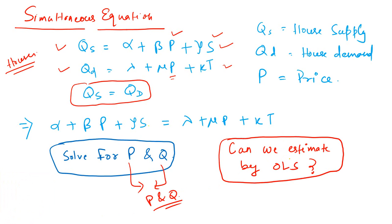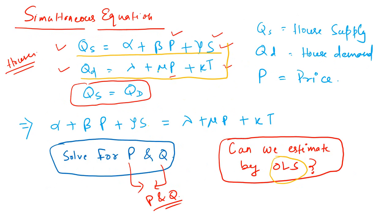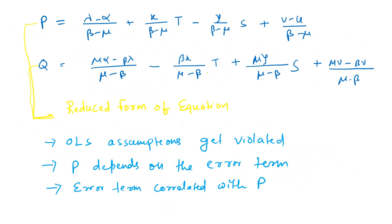The question here is: can we estimate P and Q using ordinary least squares? We have two regression equations — this is the first one and this is the second one. Can we estimate using ordinary least squares? The answer is no, and in the next slide we will see why. If you solve the previous equations with a bit of modification — bringing in the error terms — you will get the equations for P and Q.